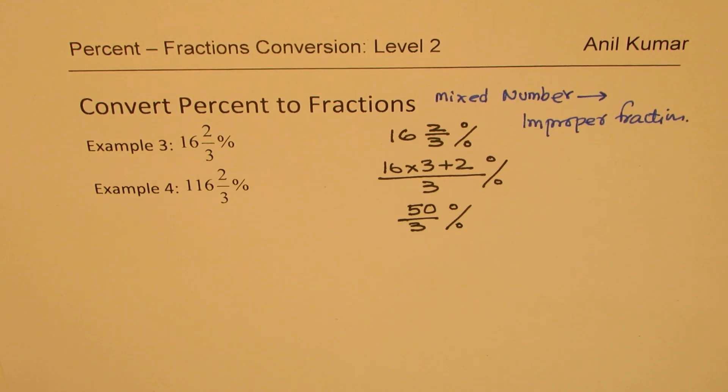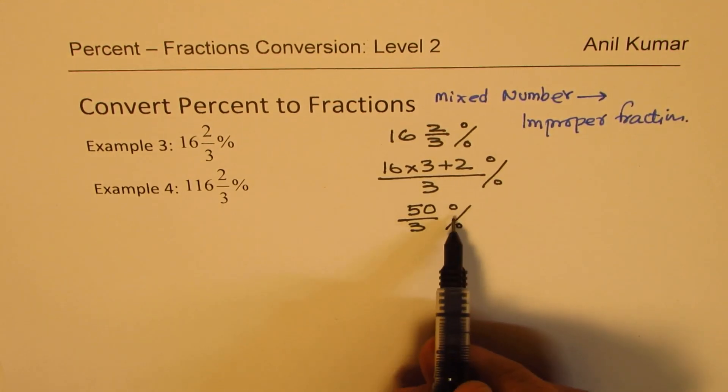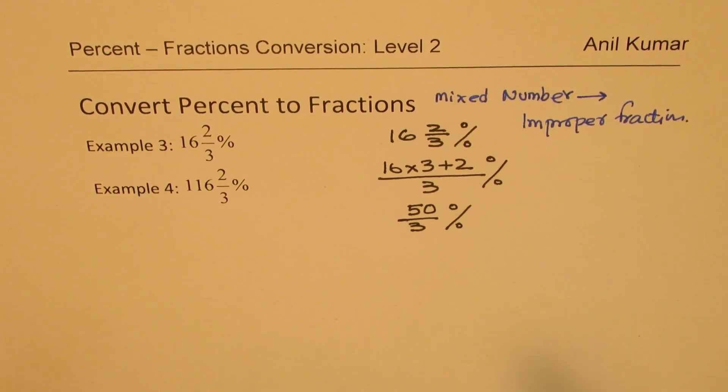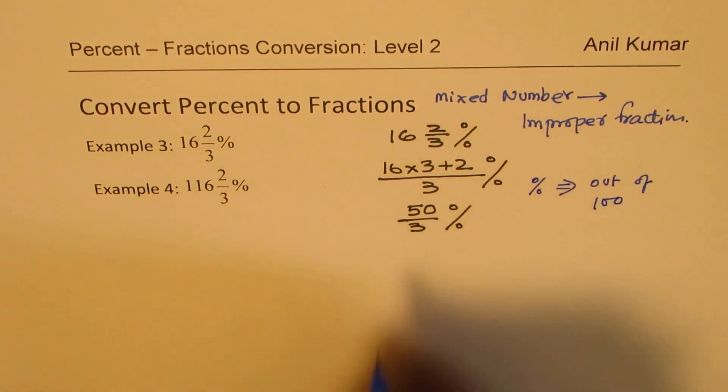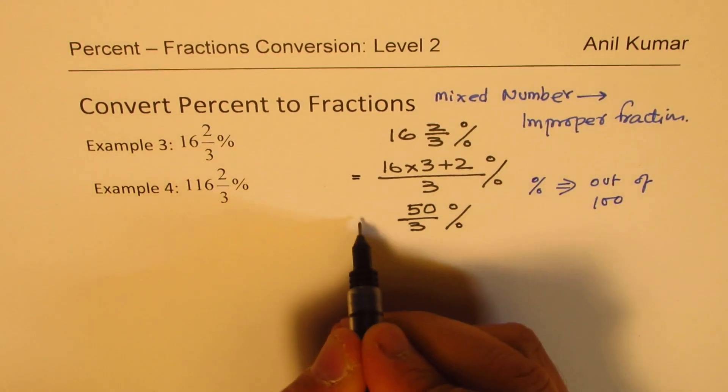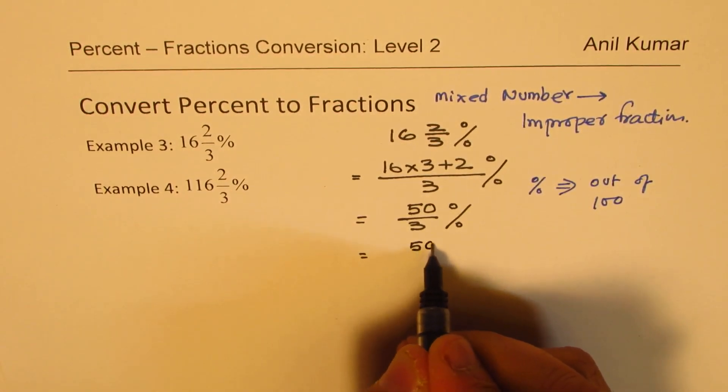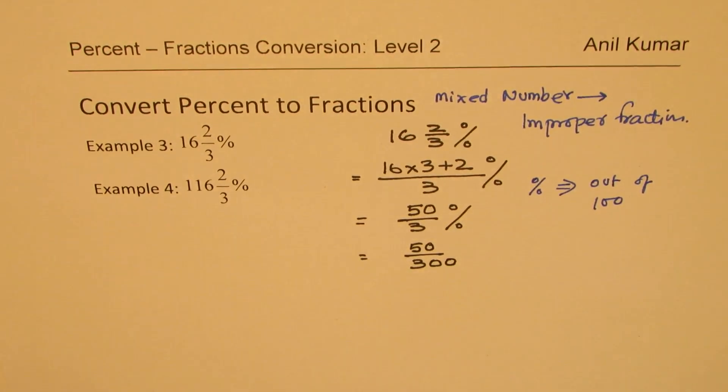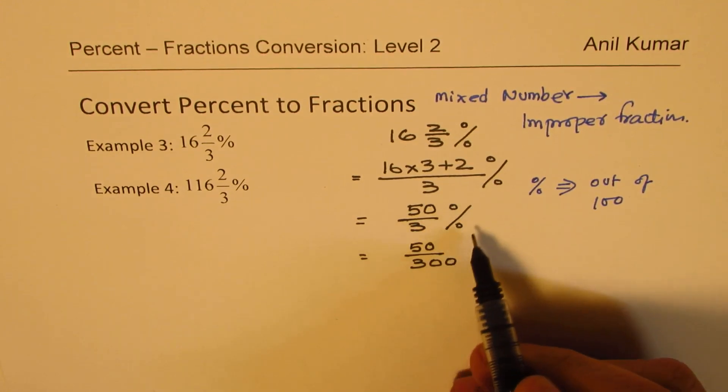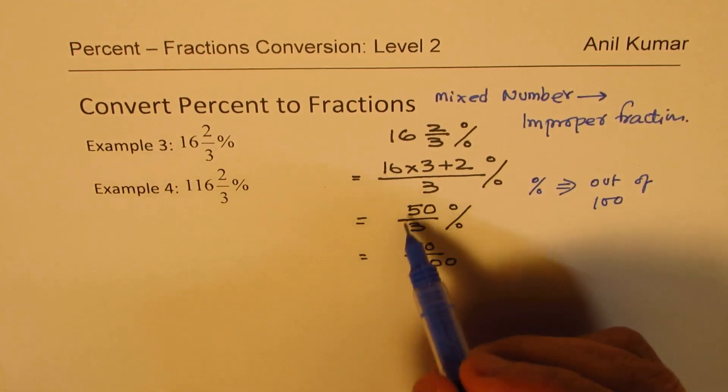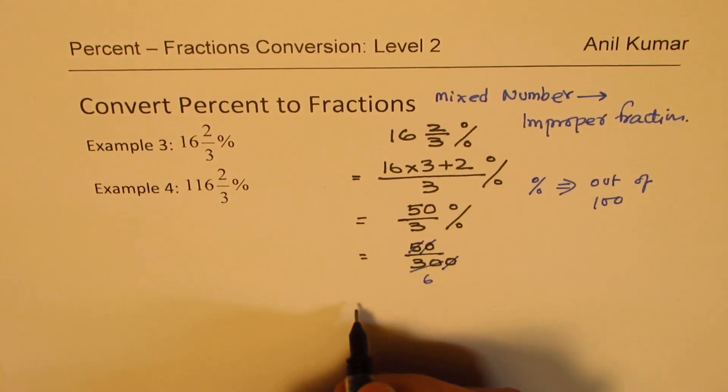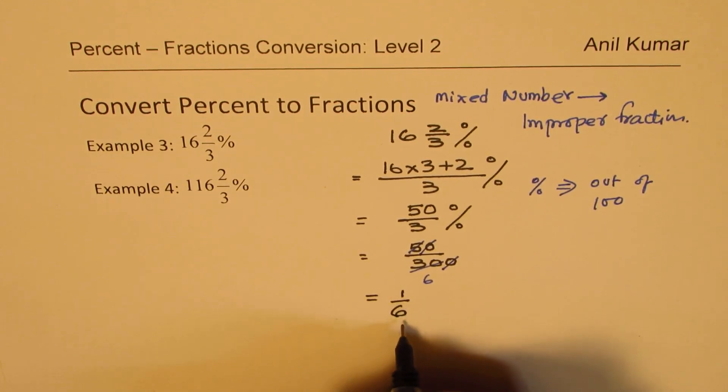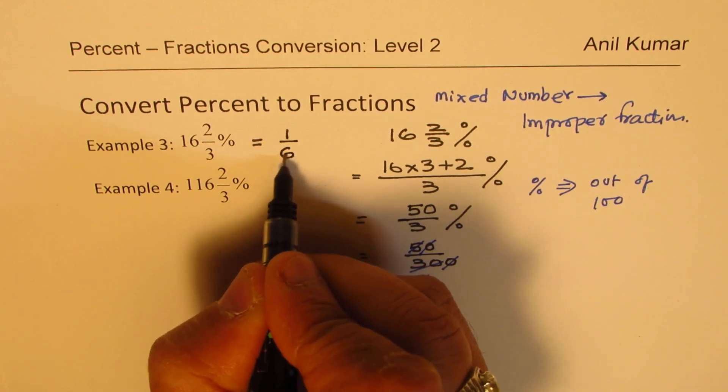Now, this percent has to be converted to fractions. And percent means out of 100. So percent means out of 100. So now, this percent implies out of 100. So we'll divide by 100 to drop the sign of percent. So it becomes 50 over 3, 100. Do you see that? So we multiply by 100 in the denominator, remove the sign of 100. We could have written 50 over 3 times 1 over 100. Now, let us simplify this. So this 0 cancels and 5 goes 6 times. So what do we get here? We get 1 over 6 as our answer.